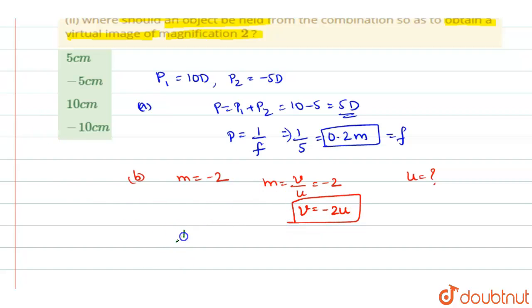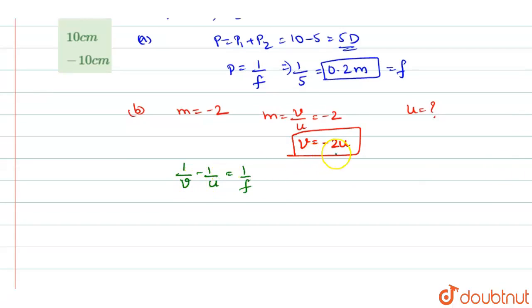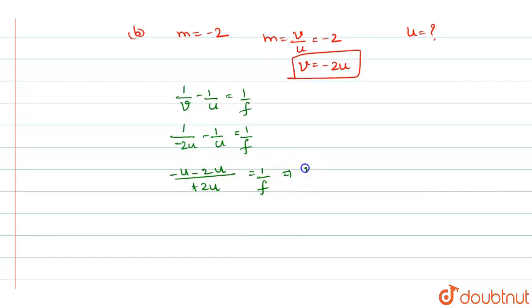We know Lens equation: 1 by V minus 1 by U is 1 by F. In place of V we will substitute minus 2 U. So that you will get 1 by minus 2 U minus 1 by U is 1 by F. When you are taking LCM, you get it as U minus 2 U over plus 2 U, so it will be minus U over 2 U is equal to 1 by F. Continuing further you will get minus 3 U by 2 equal to 1 by F.